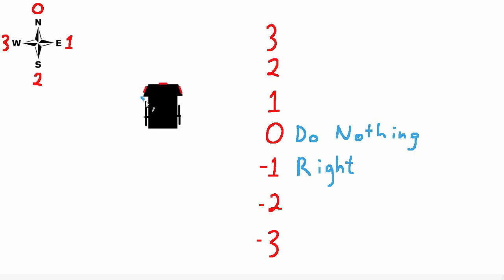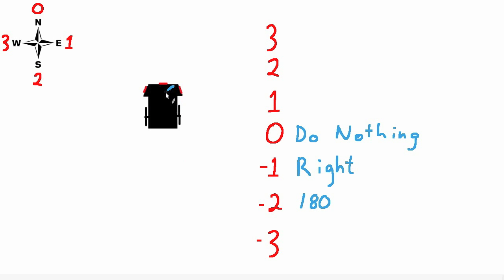Now let's suppose the find_best_neighbor function is telling us to make our robot go south. The current heading is zero, we subtract the desired heading which is two, and we end up with negative two. That means whenever we see a negative two, we should pull a 180. And finally, if the find_best_neighbor function suggests that we turn west, we get zero minus three, which gives us negative three, and that's a situation where we'd want our robot to turn left. So with negative three, we write left.